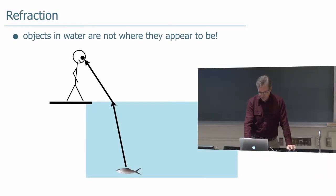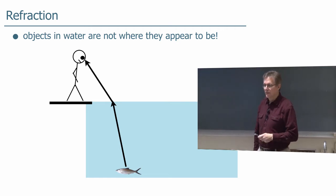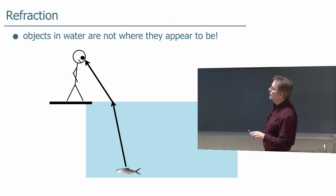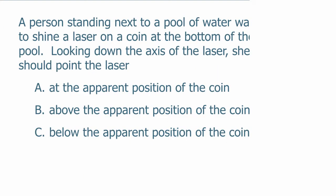Alright, let's think about this. We're going to go back to this diagram. Rather than a fish, this is a coin. The light from the coin comes up, hits your eye, and makes it look like the coin is over there. Now, if you're going to shoot a laser to hit the object, where do you shoot it? Well, if you shoot a laser back down exactly where it appears to be coming from, it will hit the coin.